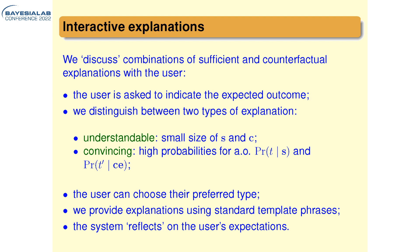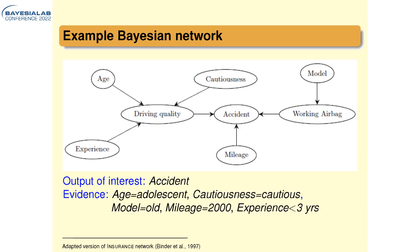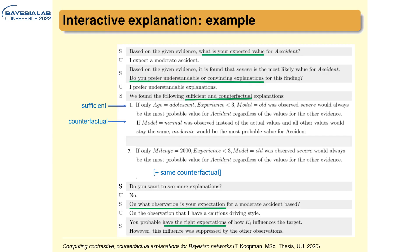The user then gets explanations phrased using standard template phrases, and at the end the system reflects on the user's explanations. I'll show an example for a simplified car insurance network. It's an adapted version of a network about car insurance, simplified for illustration purposes. We're interested in the node 'accident' — predicting whether the client will be involved in an accident — with all other outer boundary nodes observable. We have evidence for five nodes: an adolescent who claims a cautious driving style, drives an old car, and has less than three years experience.